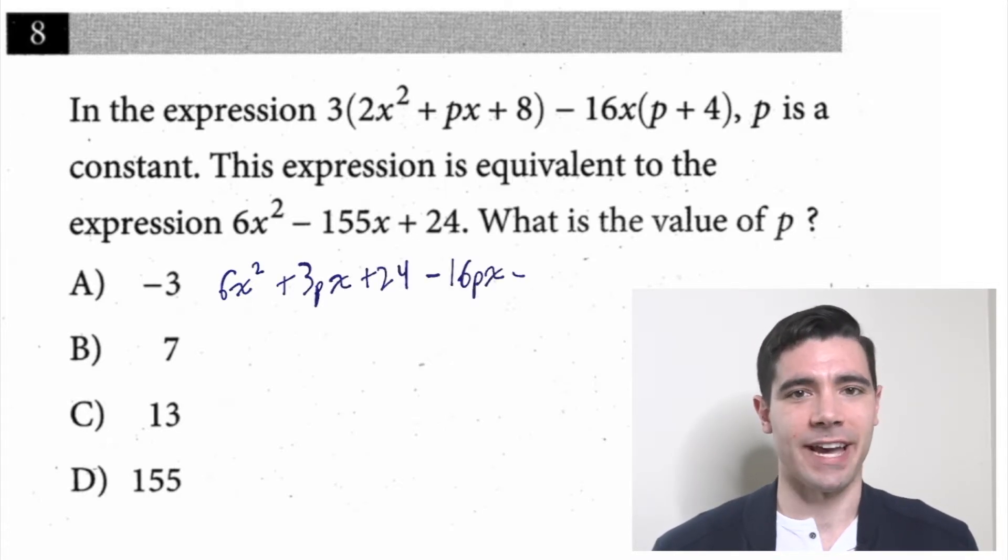So the coefficients I have on my x terms right now are 3p, negative 16p, and negative 64. And those have to match this middle coefficient from the given equation, negative 155. So I could do 3p - 16p, that's -13p - 64 = -155.